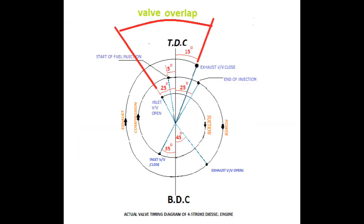There is a phenomenon called valve overlap. In the timing diagram, we can see that the inlet and exhaust valves are open simultaneously for a certain period of angle, and this is called valve overlap. This overlap, together with turbocharging, allows more efficient scavenging of combustion gases from the cylinder. The greater flow of air through the turbocharged engine also cools internal components and supplies a larger mass of charged air into the cylinder.